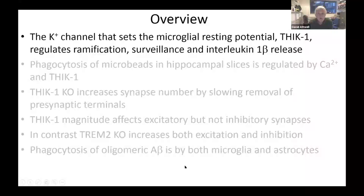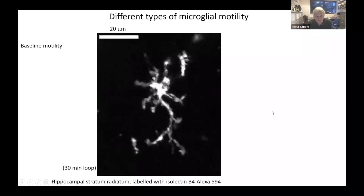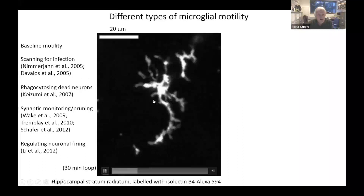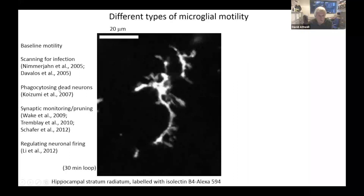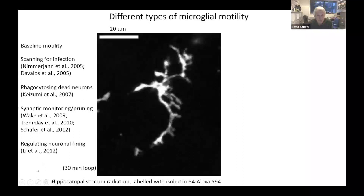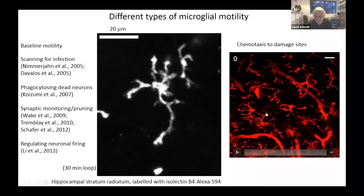You're all familiar with the random movements of microglial cell processes — this is a 30-minute loop in hippocampus stratum radiatum. These movements are thought to mediate scanning for infection, encountering dead neurons for phagocytosis, monitoring and pruning unneeded synapses, and forming purinergic junctions with neurons to regulate firing. There's also another type of microglial motility when there's CNS damage, as with a laser burn, where all processes rush to seal off that area.